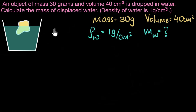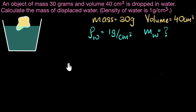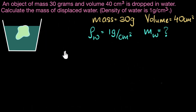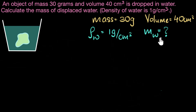That value depends on whether our object is floating or sinking. Think about it: if our object were to float, only a small amount of the object is submerged, so only a small amount of water gets displaced. On the other hand, if that same stone were to sink, the entire body gets submerged, meaning a lot of water gets displaced. So the first thing we need to do is figure out whether this object is going to float or sink.